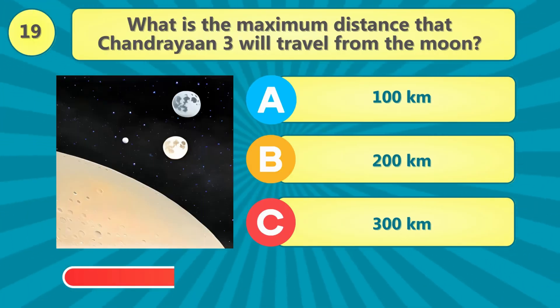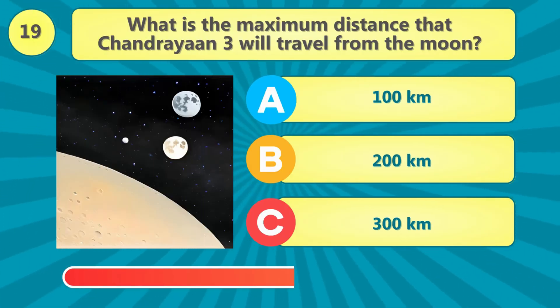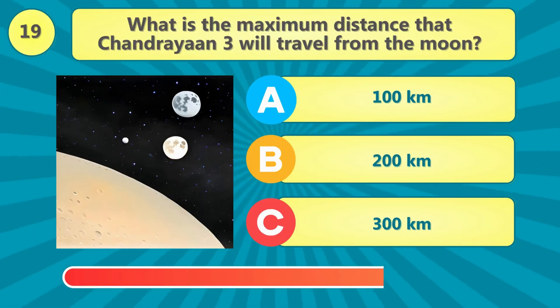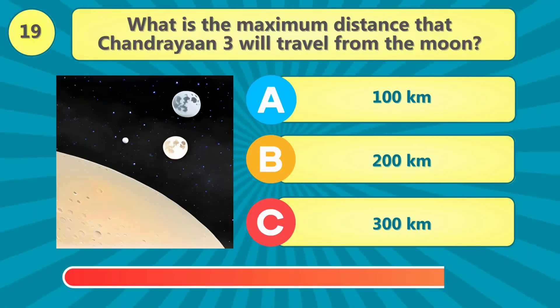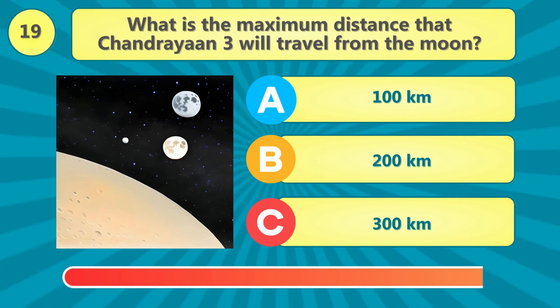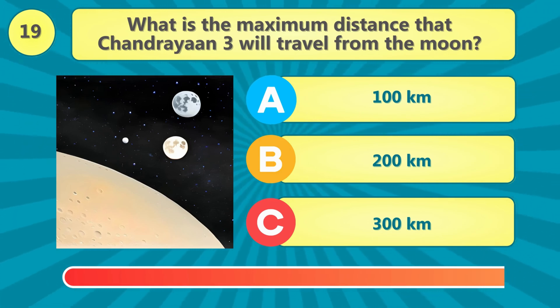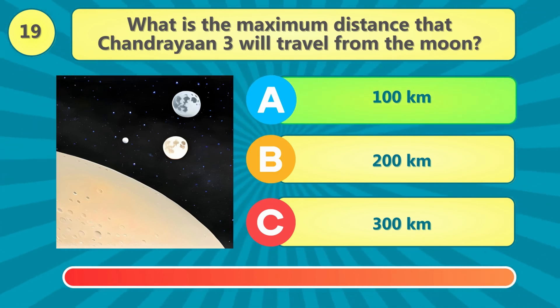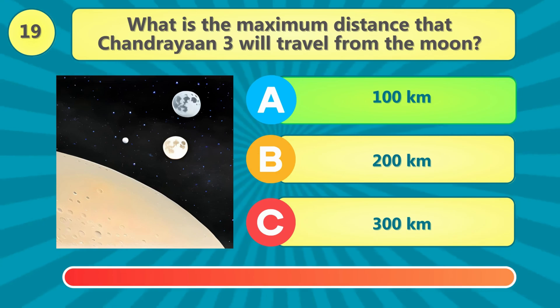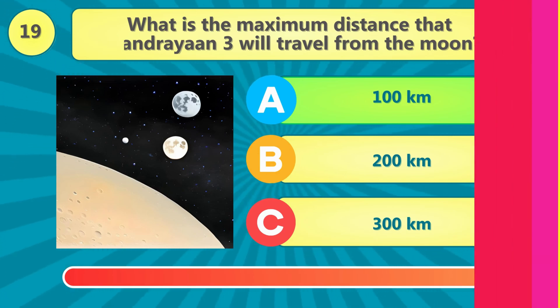What is the maximum distance that Chandrayaan 3 will travel from the moon? The answer is 100 kilometers.